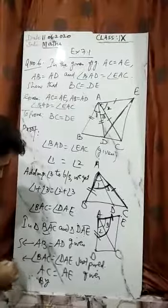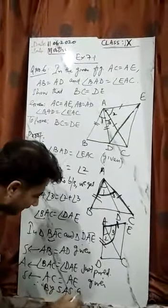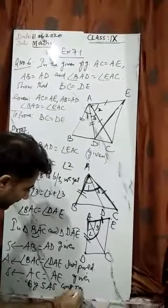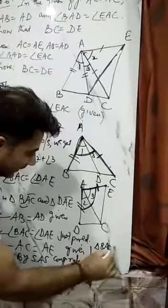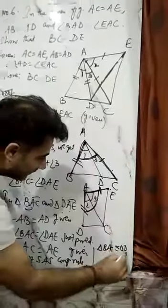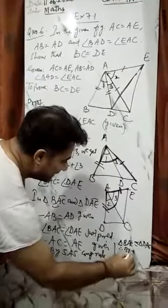So therefore, by side-angle-side, SAS congruence rule, what did you get? Triangle BAC is congruent to triangle DAE.